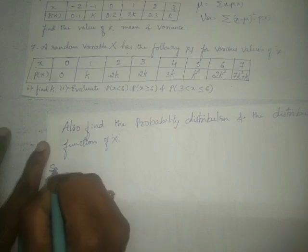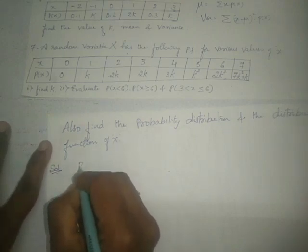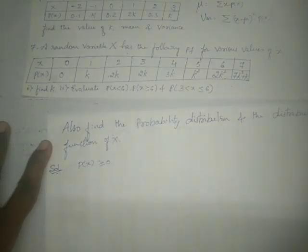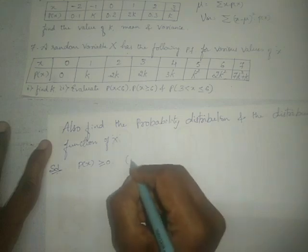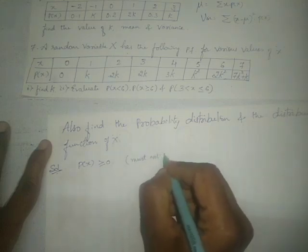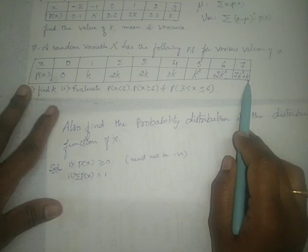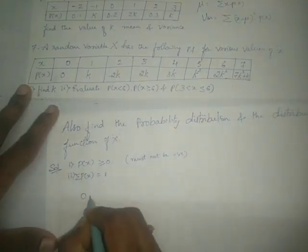Solution. We use two properties: P(X) must be greater than or equal to 0 — it must not be negative. That is the first property. The second property is that the summation of all P(X) values must be equal to 1. By adding all these values we must get 1, and using that we will solve for K.